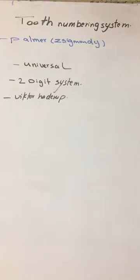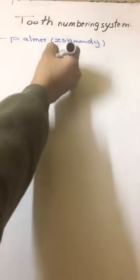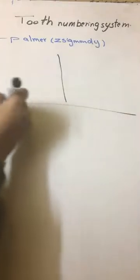First of all, Palmer or Zsigmondy, Universal, Two-digit, and Viktorhøjrop systems. I'll speak about one by one. Palmer or Zsigmondy, made by Adolf Zsigmondy in 1861. One of its disadvantages is difficulties in keyboard and computer language, so it depends on two lines, one vertical line and one horizontal.